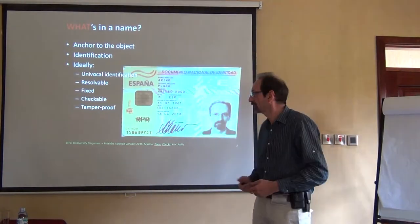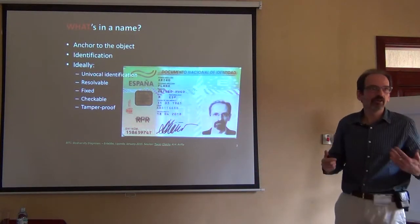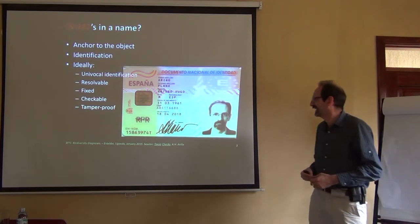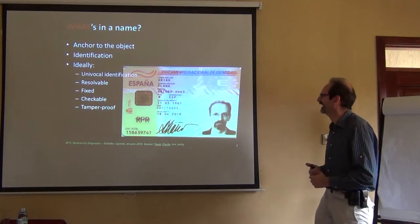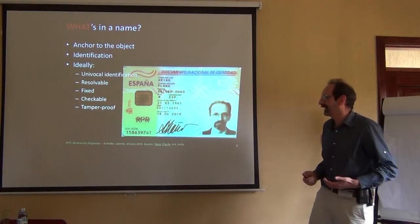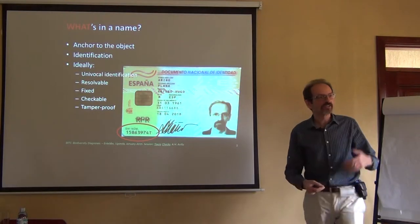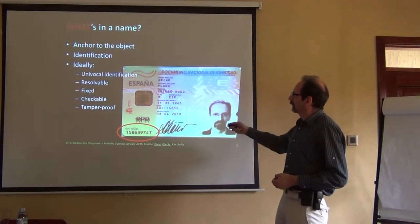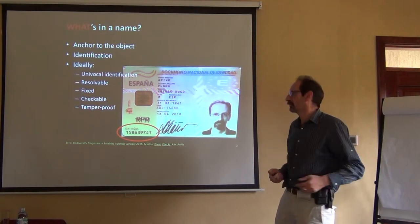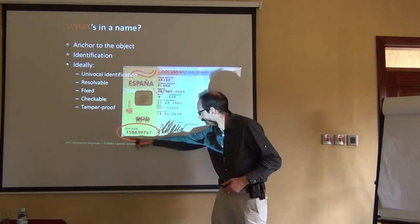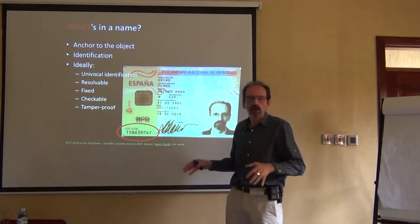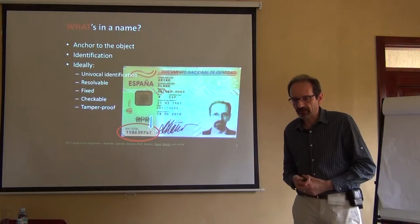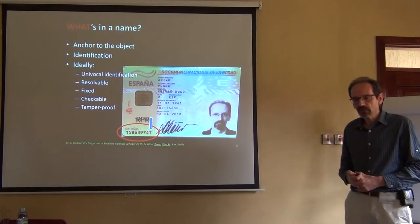You all have passports. I have my ID card — this is my ID card for Spain, and it has all the requirements. It has a unique ID number right here, and it's unique. It's univocally tied to me and cannot be reused. It is apparently tamper-proof because it has a letter here which is a hash of the rest of the numbers, so if I type it wrong in some application it won't match, and we know something was wrong. The problem is that we don't have that in the biodiversity realm.